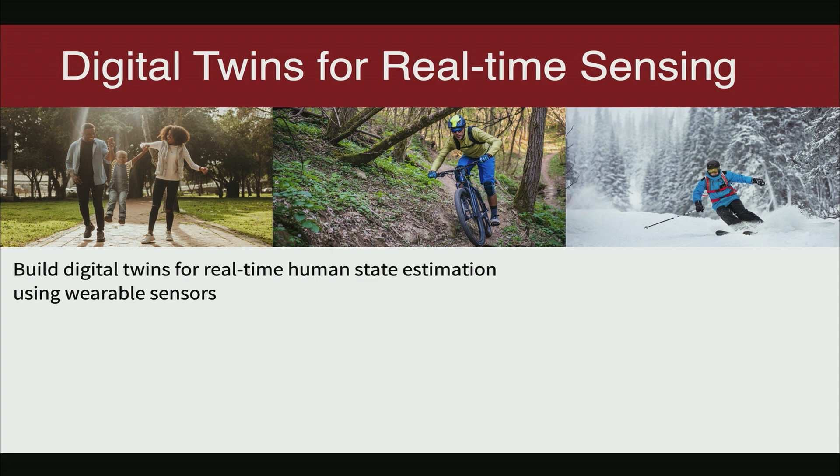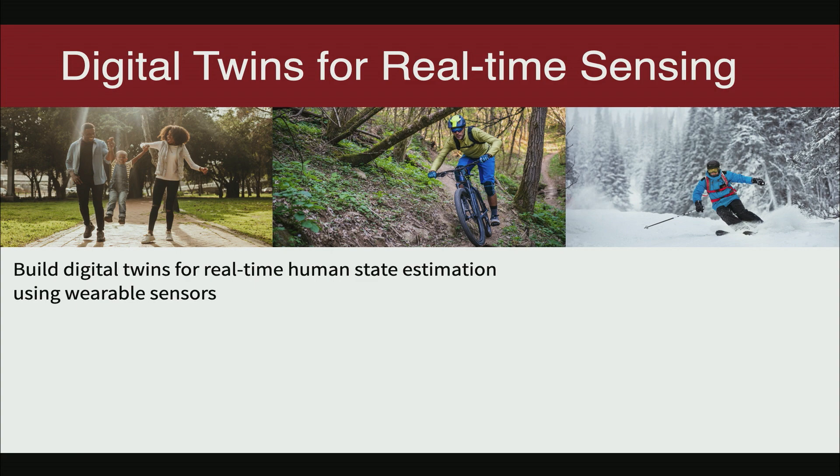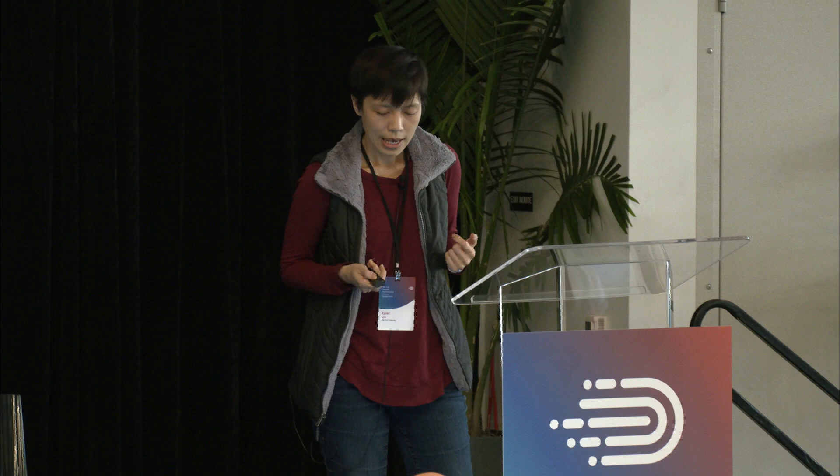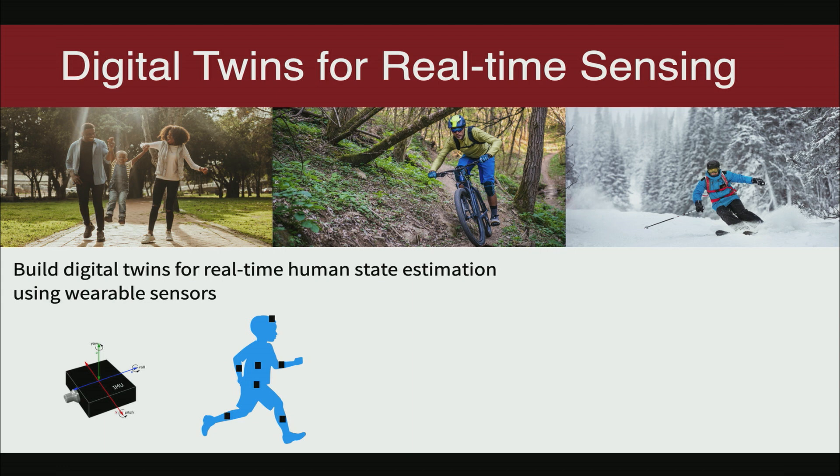Another use case for digital twins is real-time sensing of human state. We want to know the 3D pose of the human in real time. This is easy to do in the lab — we can just put sensors on, we can have external cameras — but it's really hard to do in the wild. So we build digital twins for real-time human state estimation using six IMU sensors.